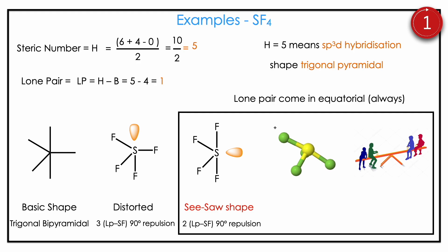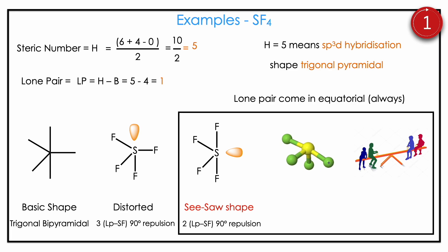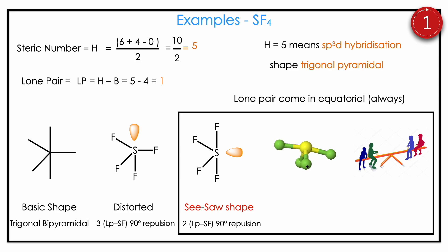Then SF4. Sulfur valence is 6, bonded atoms are 4. H = (6 + 4 − 0) / 2 = 10 / 2 = 5. Lone pair = 5 − 4 = 1. H = 5 means trigonal bipyramidal geometry. The lone pair comes in equatorial, as we already predicted. Since the electron is not visible, the real structure looks like a seesaw. The 3D animation will help you understand much better. So the shape of SF4 is seesaw.